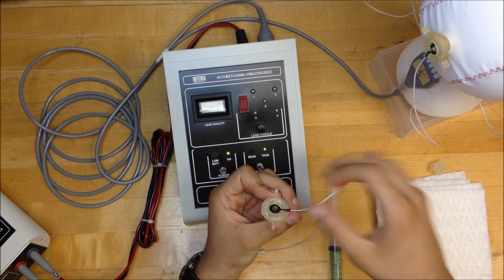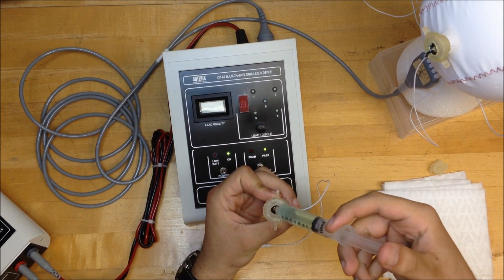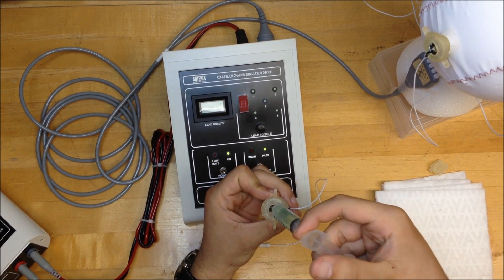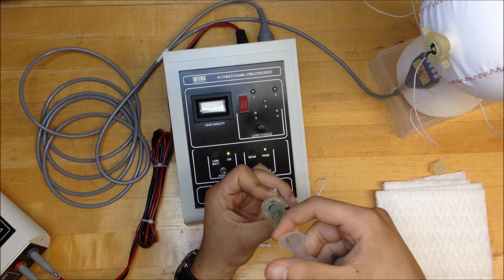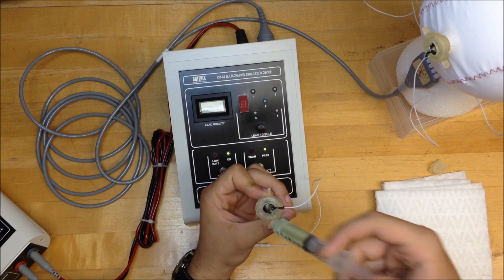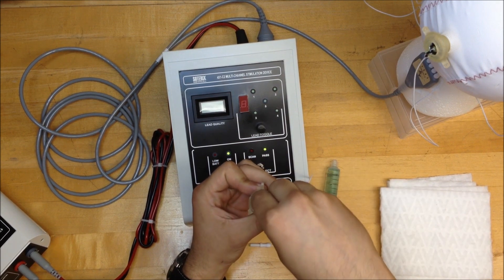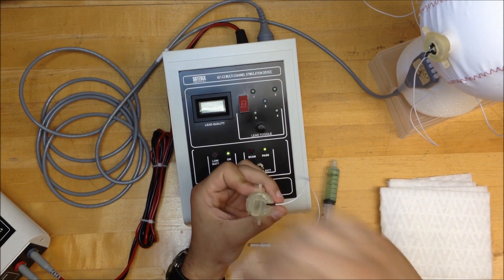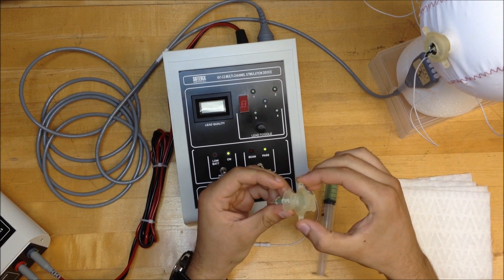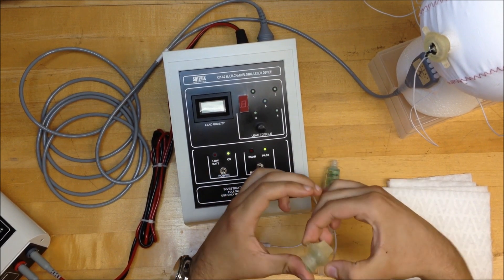Once you have it sit properly, you can fill in the rest with the electrode gel. Make sure the ring electrode is totally immersed in the gel, and then lock it down with the lock provided with the ring electrode.